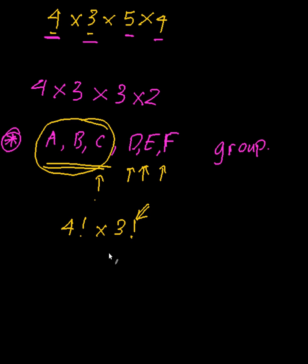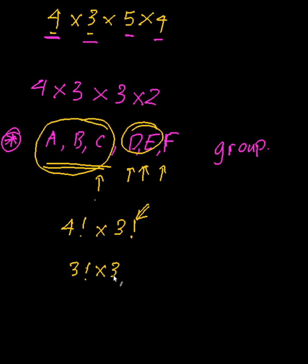Along the same lines, if A, B, C is one group and D, E is another group, then I have three elements, so there are three factorial ways of arranging them. A, B, C can be arranged internally in three factorial ways, and D, E can be arranged in two factorial ways.